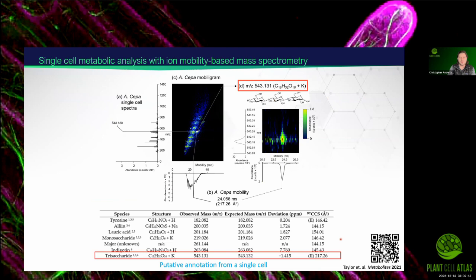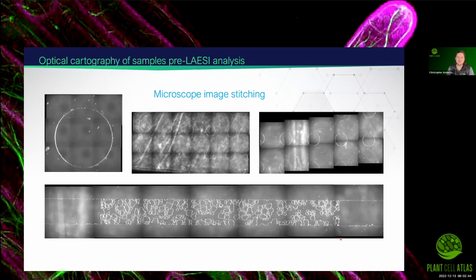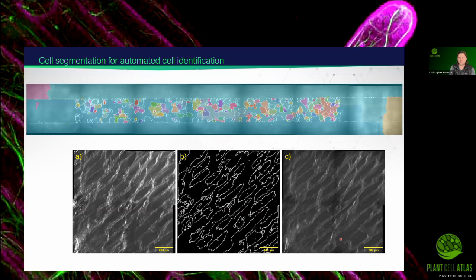One of the things we were able to do — using ion mobility data, which is an orthogonal method where we measure the actual size of a molecule before measuring its mass — is measure multiple molecules from single cells at a time and have high confidence in their molecular annotations. Not only could we do individual microscope images, but we could do image stitching and autofocus if our sample had topography, which helps keep the laser in focus. Through cell segmentation and automated cell identification using machine learning plugins in ImageJ, we're able to identify in an automated fashion where cell centers are, so we can image cell by cell and move much faster.